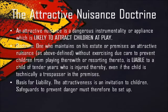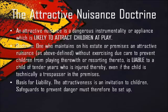An attractive nuisance is a dangerous instrumentality or appliance which is likely to attract children at play. According to the doctrine, one who maintains on his estate or premises an attractive nuisance without exercising due care to prevent children from playing therein is liable to a child of tender years who is injured thereby, even if the child is technically a trespasser in the premises. The basis for liability is that attractiveness is an invitation to children, and safeguards to prevent danger must therefore be set up.